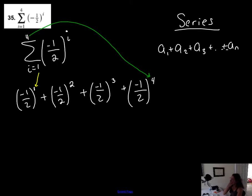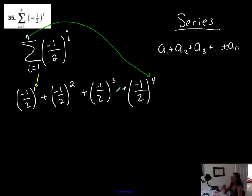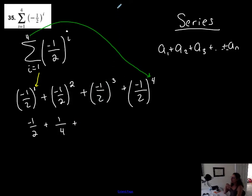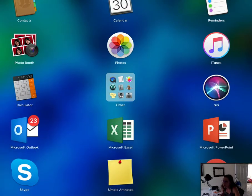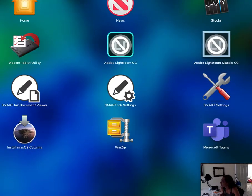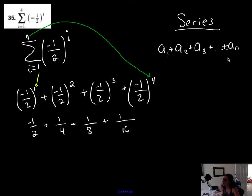Now I have to actually simplify this because I should get a number — what is this sum of those first four terms? Negative one-half to the one is negative one-half, plus negative one-half squared is positive one-fourth, plus negative one-half to the third becomes negative one-eighth — so I'm alternating signs — plus negative one-half to the fourth is positive one-sixteenth. I'll use my calculator to add these up, but you should know how to do it by hand too.